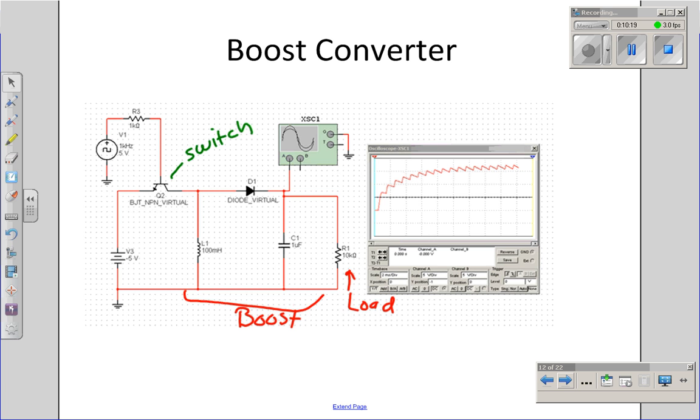Over on the right, I can see what happens as I turn that transistor on and off. When I turn the transistor off, I get LDI-DT, a large spike in current through the inductor. That causes a spike in the output voltage. Diode D1 turns on, and I raise the voltage on the output, on the capacitor.